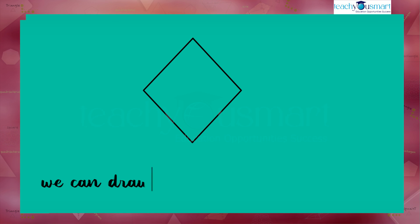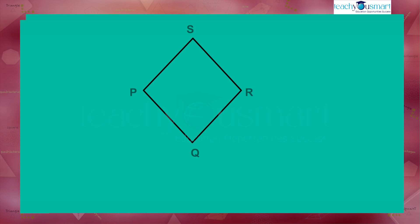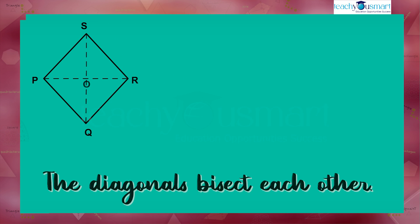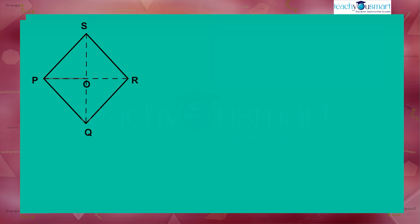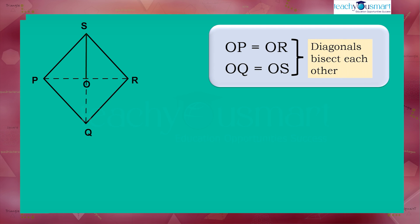We can draw two diagonals in a rhombus. In rhombus PQRS, PR and QS are the diagonals that meet at O. Since it is a parallelogram, the diagonals bisect each other — that is, OP equals OR and OQ equals OS.